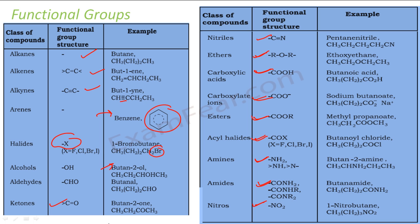All these are critical functional groups that you should remember: alkanes, alkenes, alkynes, arenes, halides, alcohols, aldehydes, ketones, nitriles, ethers, carboxylic acids, carboxylates, esters, acyl halides, amides, and nitros. These are the major functional groups — please remember this chart. You should know all these functional groups.